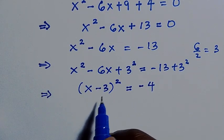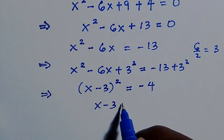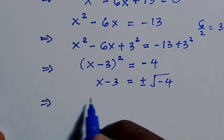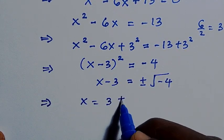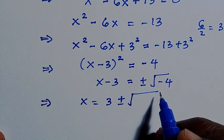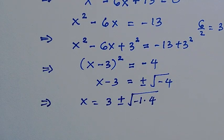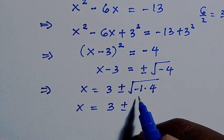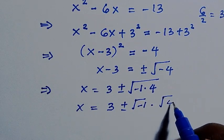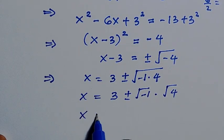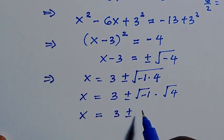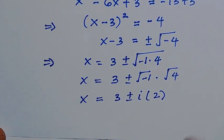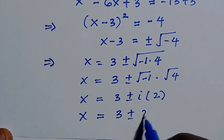Taking the square root of both sides gives x minus 3 equals plus or minus the square root of minus 4. So x equals 3 plus or minus the square root of minus 4, which breaks down as minus 1 times 4. By the rule of surds, we separate this as square root of minus 1 times square root of 4. Since square root of minus 1 equals i and square root of 4 equals 2, we get x equals 3 plus or minus 2i.